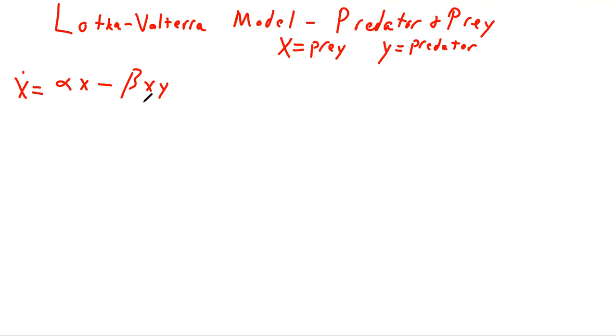And that's it. This represents how many animals are being consumed of the prey by the predator. So now let's write the equation for the predator.